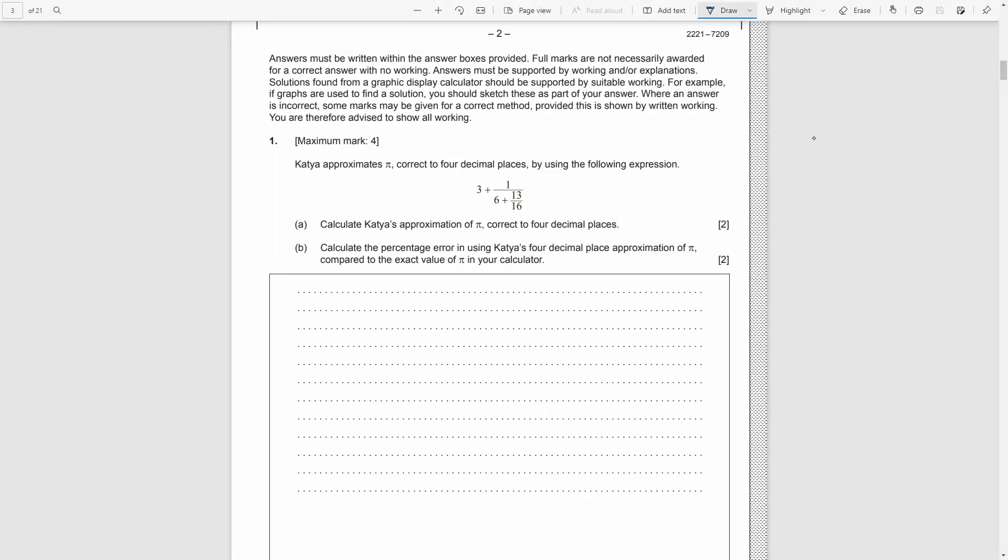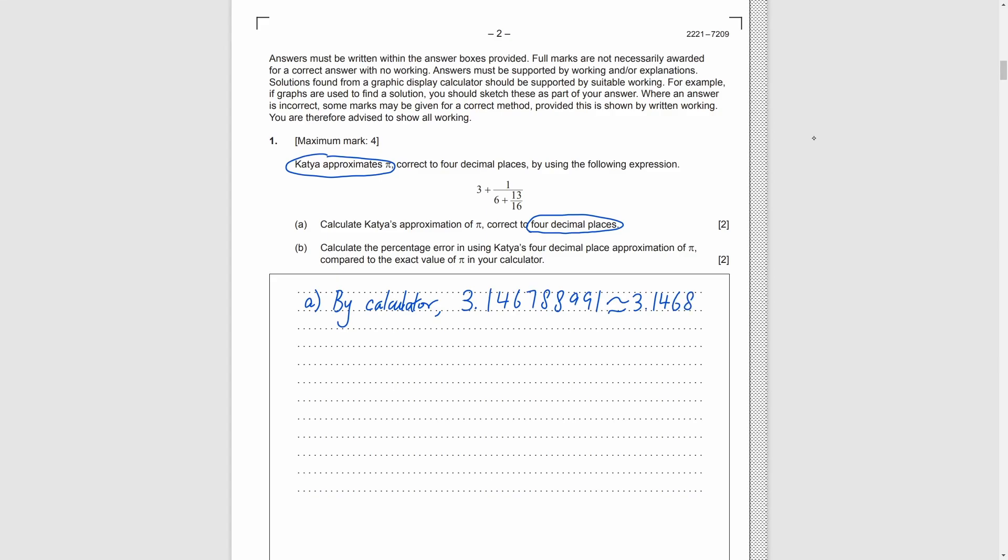Question 1, here is an expression called Cadya's approximation of pi. For part A, we can input this into the calculator, and we get 3.146788991. As we need to correct it to 4 decimal places, the final answer is 3.1468.